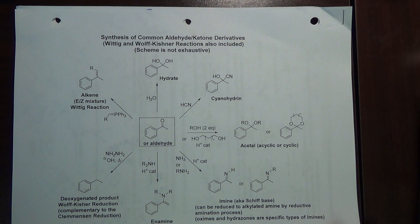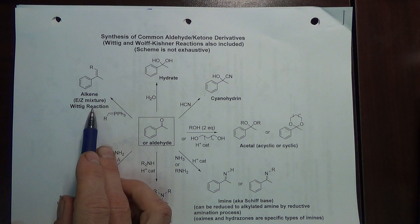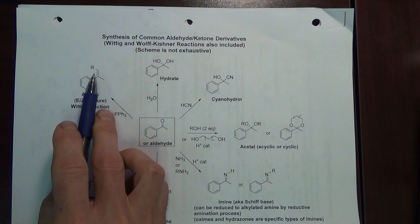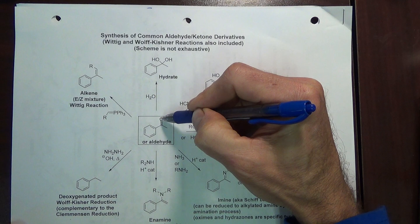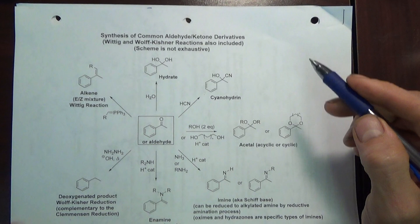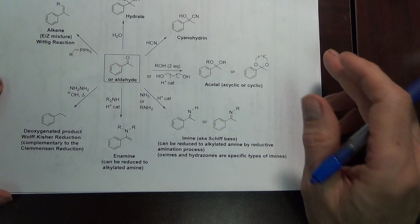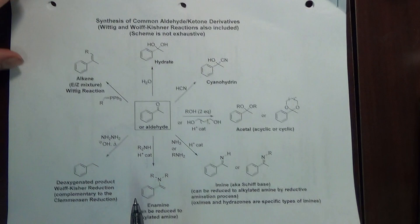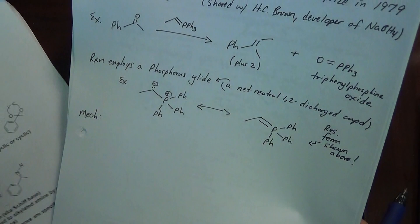In this video we will look at the Wittig reaction. This is a reaction that converts essentially an aldehyde or ketone into an alkene. The oxygen of the aldehyde or ketone is replaced with a carbon. When we make an imine, the oxygen of the aldehyde or ketone is replaced with a nitrogen. Before we look at the Wittig reaction, let's look at a couple of miscellaneous applications of imines.